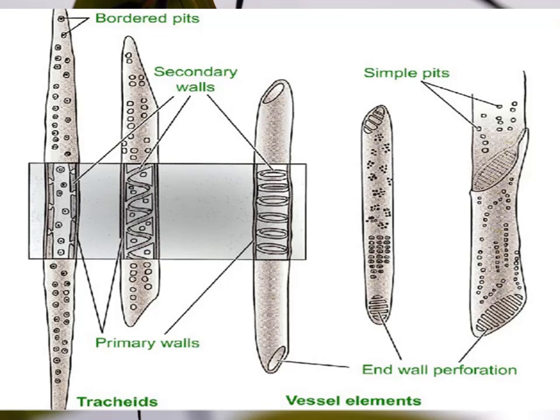Vessel elements also have pits — either bordered pits or simple pits. Bordered pits are those in which the cell wall has an extension toward the pit pore, while simple pits have no cell wall extension toward the pit pore. Mostly, tracheids have bordered pits while vessel elements have simple pits.